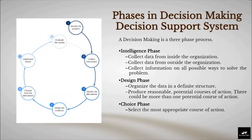Decision-making is a three-phase process. First, the Intelligence Phase, which includes collecting data from inside the organization, collecting data from outside the organization, and collection of information on all possible ways to solve the problem. Second, the Design Phase, which includes organizing the data in a definite structure and producing reasonable potential courses of action to solve the problem — there could be more than one potential course of action. And third, the Choice Phase, in which management selects the most appropriate course of action.